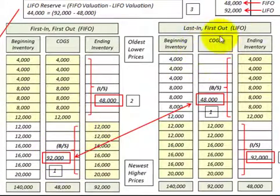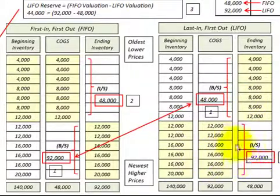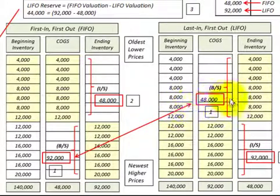Now let's look at our LIFO inventory. This is where we use our newest inventory first, which is the higher cost inventory, so our ending inventory would be our older, lower priced inventory. Taking the example where we used $92,000 worth of inventory — that would be our cost of goods sold on the income statement — our ending inventory would be $140,000 less the $92,000 used, giving us an ending inventory of $48,000.